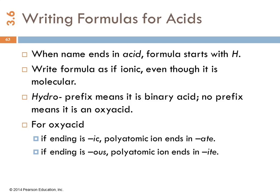That's naming them. Writing formulas is going the other direction. Anytime we see the name of a compound that ends in acid, we know that the formula is going to start with an H. We write the formulas thinking about them as if they were ionic, even though we know it is molecular. If the name starts with hydro, we know it's a binary acid. If there's no prefix, it's an oxy acid. For the oxy acids, we do the reverse of the Rick ate thing. If it's -ic we change it back to -ate so that we know what the polyatomic ion is. If it's -ous we change the ending to -ite to find out what that polyatomic ion is.